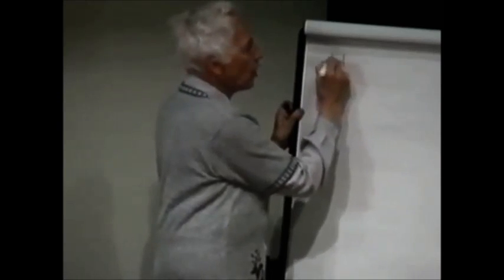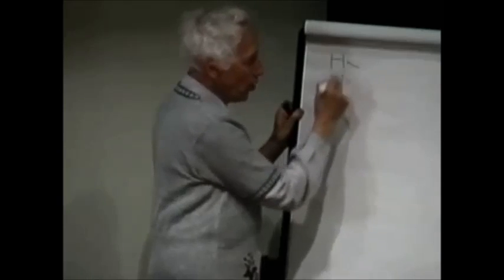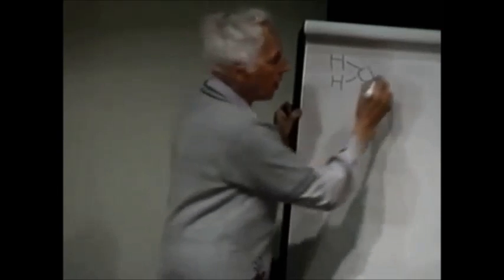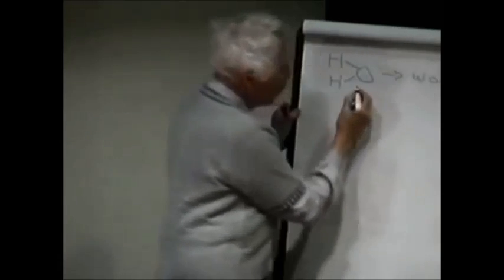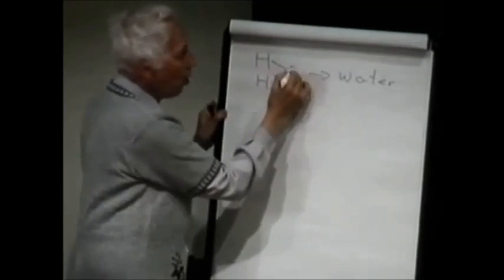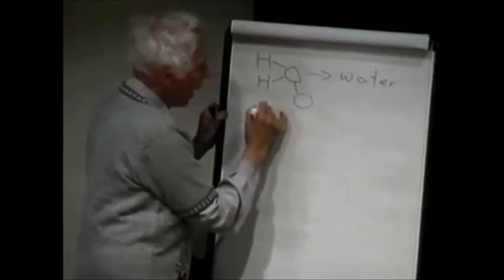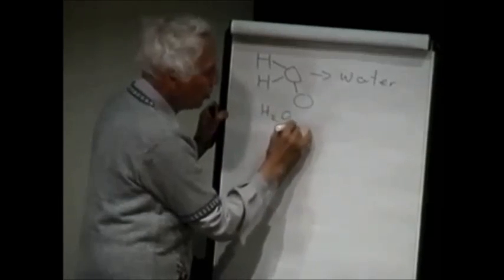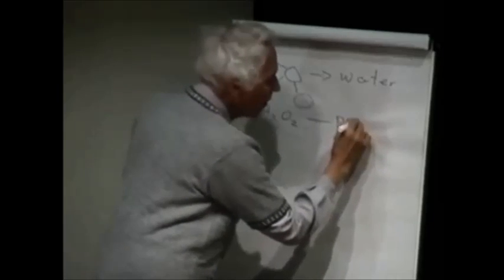All of you know that water is H2O — two H's and one O. That's water. Now if you add one extra O, you have H2O2, and that's peroxide.